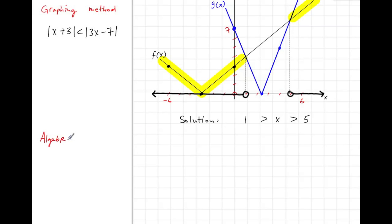Now we want to do this using the algebraic method as well. We write out the inequality: |x + 3| < |3x - 7|. Now we square both sides - this will still be a true statement. So (x + 3)² < (3x - 7)².